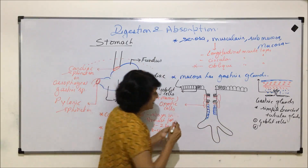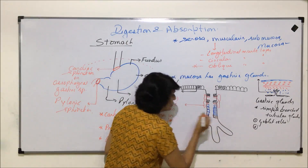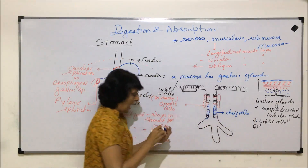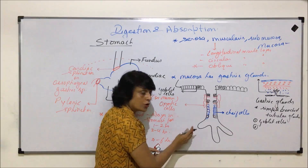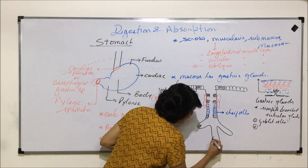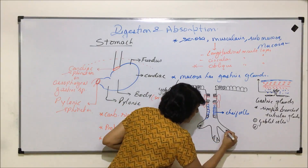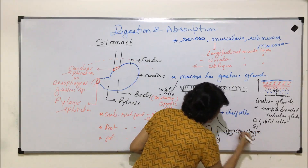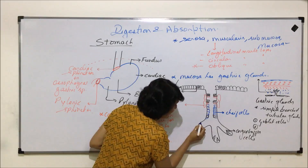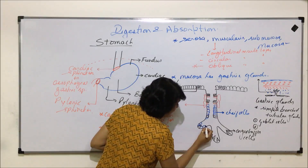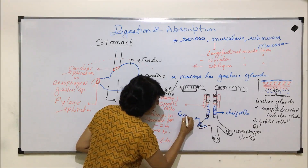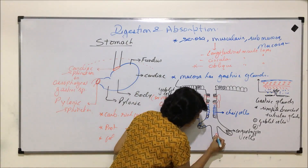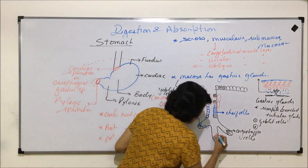In between there are also goblet cells secreting mucus. The next cell type is chief cells, found in the lower region of the gland. Below those are certain slightly triangular cells called argentophil cells. There are also cells that are endocrine in nature, known as G cells.